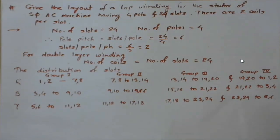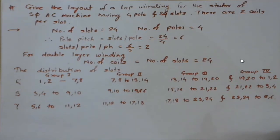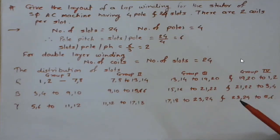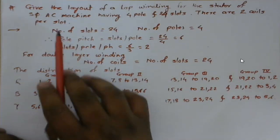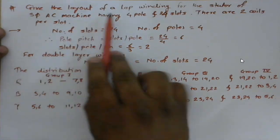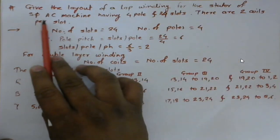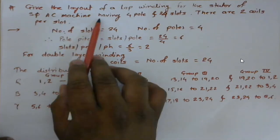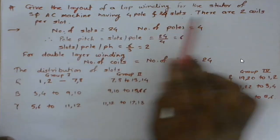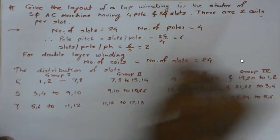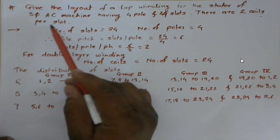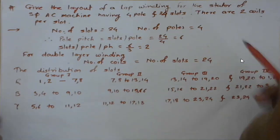Welcome back. In the last session we saw how to draw the single layer lap type winding for a four-pole 24-slot machine. Now we'll see double layer winding for the same four-pole 24-slot motor. The problem statement is: give the layout of lap winding for the stator of a three-phase AC machine having four poles and 24 slots, with two coils per slot — meaning it is double layer.